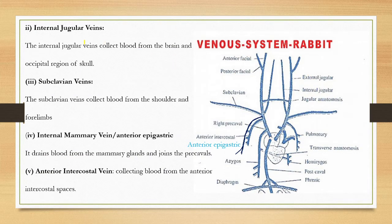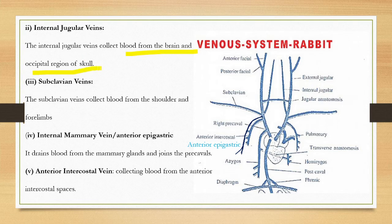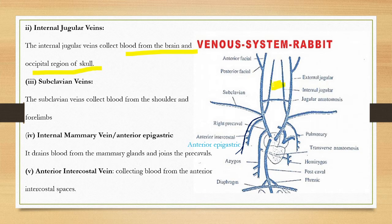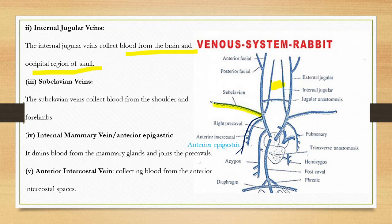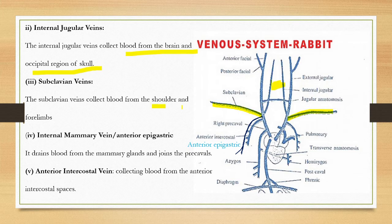The internal jugular vein collects blood from the brain and occipital region of the skull. These two are the internal jugular veins. Another branch is the subclavian vein, which collects blood from the shoulder and forelimbs.